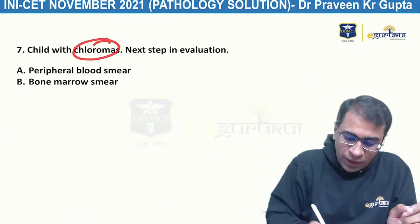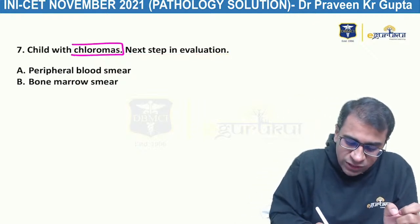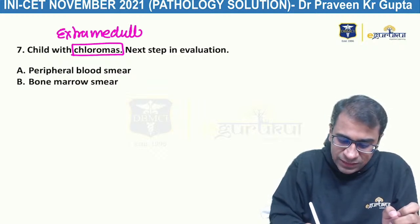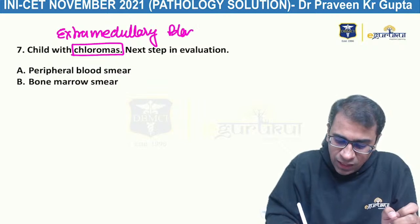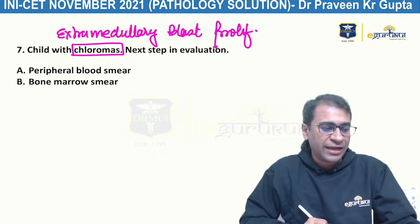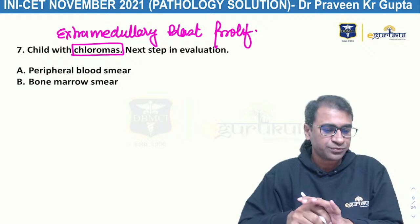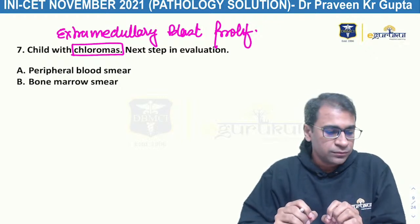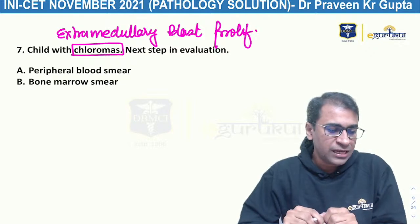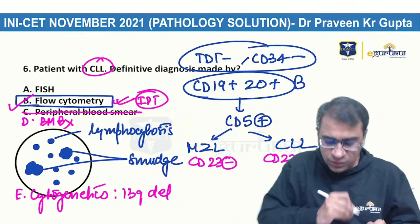A child with chloroma — the next step in evaluation. Chloroma is extra-medullary blast proliferation, presenting as a swelling — either proptosis or any soft tissue swelling in the body. The options were bone marrow biopsy and cytogenetics as options three and four; peripheral smear was not in the options.